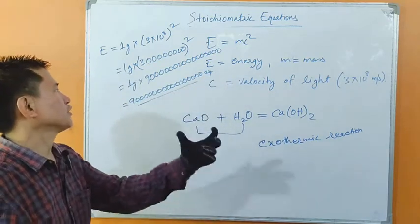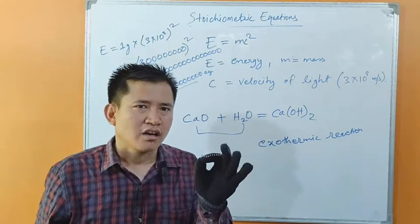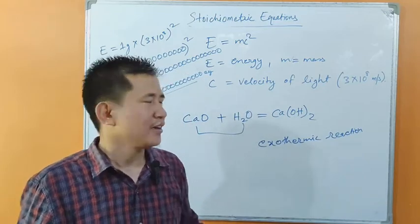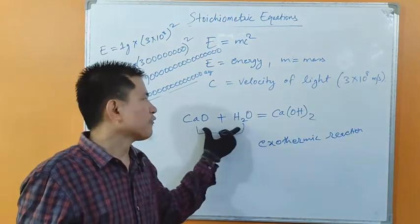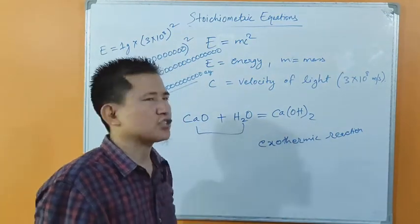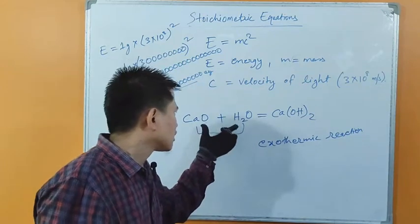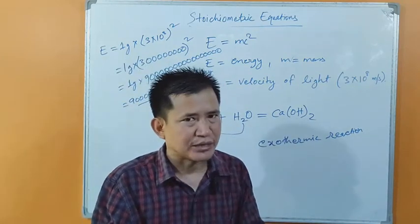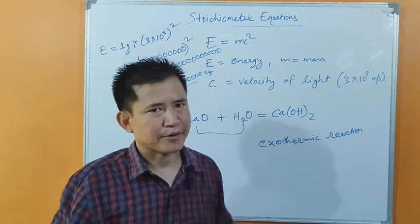Even 1 gram of substance when converted into energy releases this much amount of energy. The amount of energy released is very, very high even for a small quantity of mass. When little heat energy is lost in a chemical reaction, the mass lost is negligible — very little amount of mass is lost — so we do not consider the mass lost during chemical reaction.